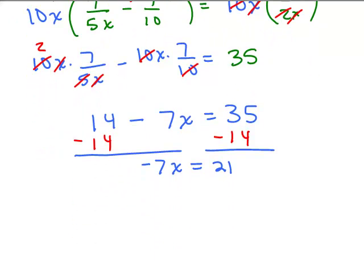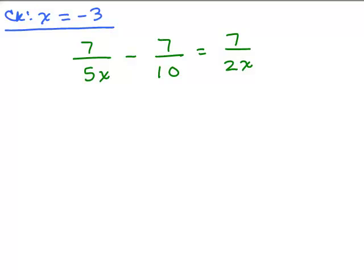Lastly, I want to divide by negative 7 on both sides to solve for x. So x equals negative 3. It's very important to check your work because it's easy to make a mistake. So what we're going to do is take the original problem, plug in negative 3 for x, and see if both sides of the equation are the same number after simplifying.